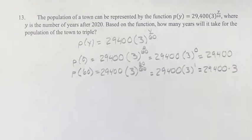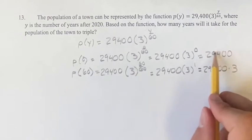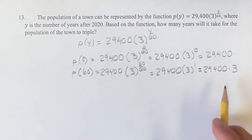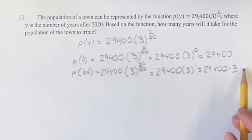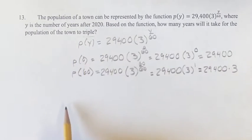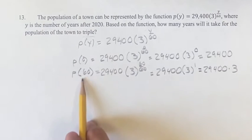So we're saying if this is the population in the year 0, the population times 3, so that population tripled, is going to happen 60 years later.